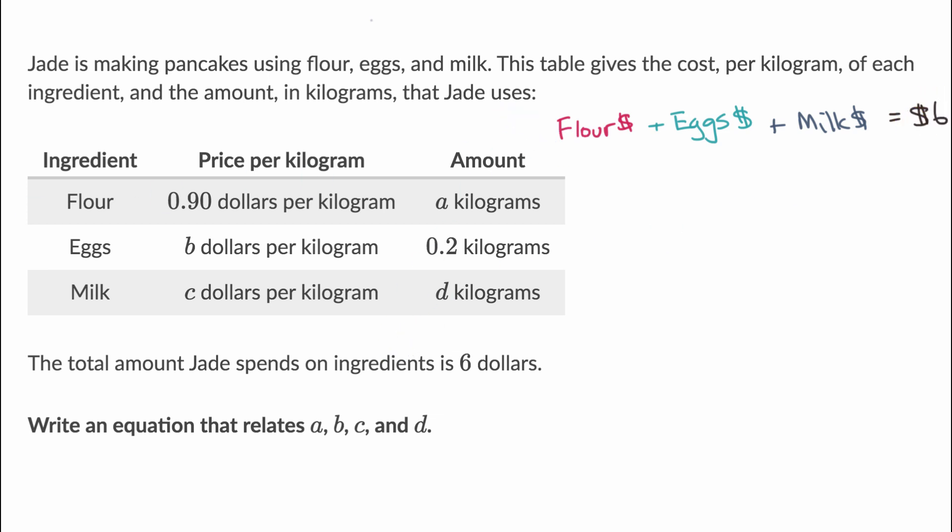And so what's the total amount that Jade is going to spend on flour? Well, we can just look right over here, 0.9 dollars per kilogram times A kilograms. So Jade's going to spend 0.9A dollars. I'm just going to multiply these two things to figure out how much Jade spends on flour.